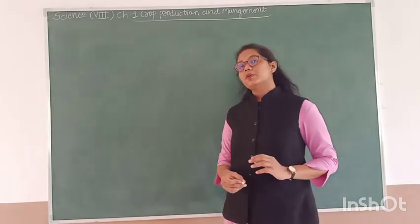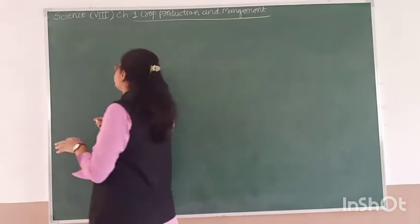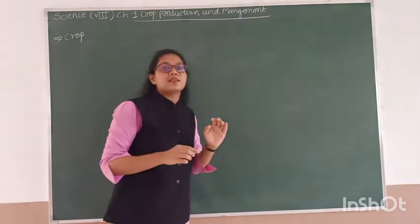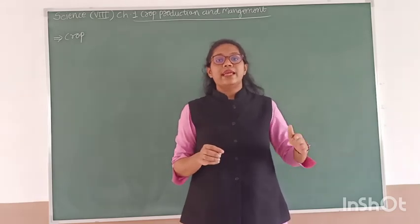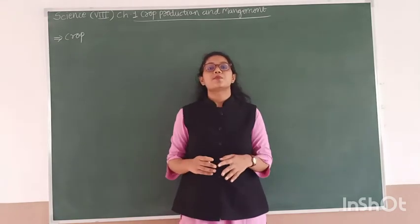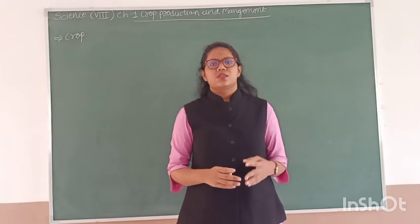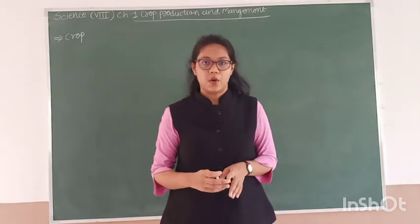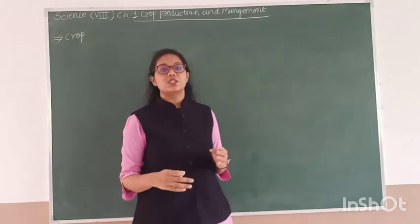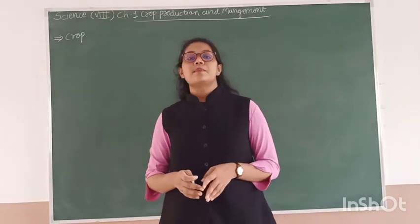Right now don't write in your notebook, because I am revising the last things. First, we have learnt about the crop. The simple meaning of crop means any food that we can produce on the largest scale — that is called a crop. Crops include vegetables, fruits, and cereals such as wheat, rice, sugarcane, and bajra. The meaning of management is to manage the crops after production on a large scale.